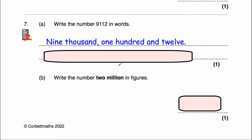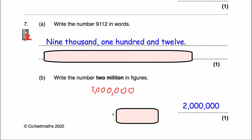Question 7B says to write the number 2 million in figures. So we count up: 2, 20, 200, 2,000, 20,000, 200,000, 2 million — that is a 2 followed by 6 zeros. So the answer is 2,000,000.